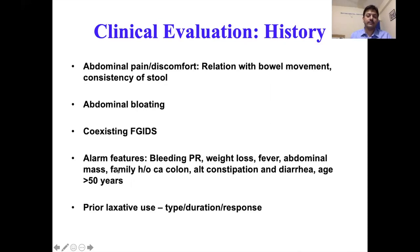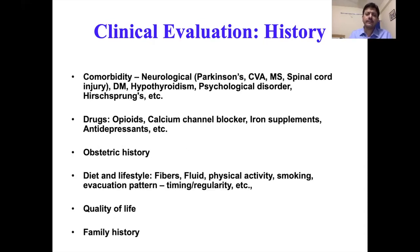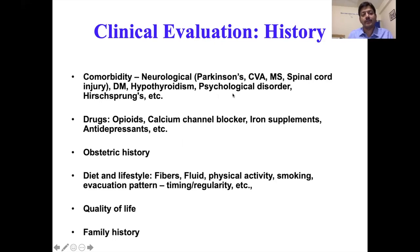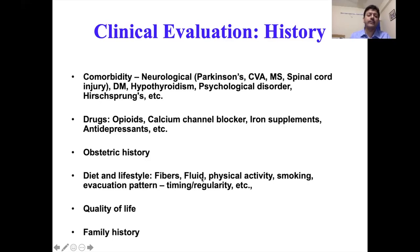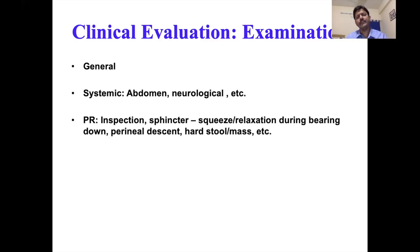We also ask about past laxative use — types, duration, and response. For secondary causes, we look for comorbidities including neurological disorders like Parkinson's, stroke, multiple sclerosis, and spinal cord injury; metabolic disorders like diabetes mellitus and hypothyroidism; psychological disorders; and history of Hirschsprung's disease. Drugs are important — they can be the primary cause or worsen constipation; key ones include opioids, calcium channel blockers, and iron supplements. Diet and lifestyle factors such as low fiber intake, low fluid intake, physical inactivity, and smoking are also risk factors.